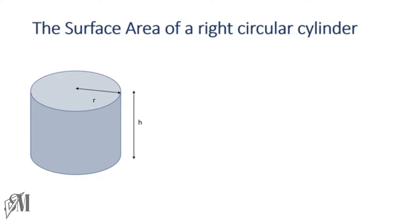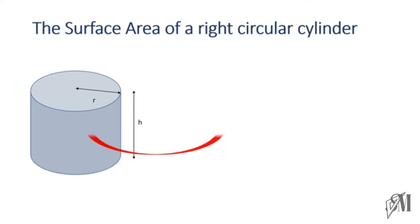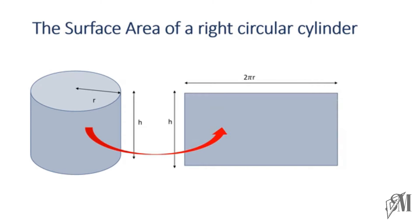If you look at this cylinder, its radius is given as r and the height is given as h. If you take this cylinder, there are three surfaces: you have a curved surface and two plain circular surfaces. First of all let's take this curved surface — if you open this cylinder's curved surface, you will get a rectangle.